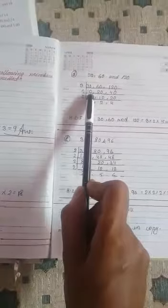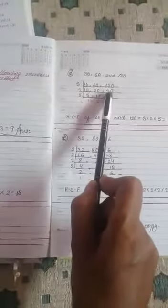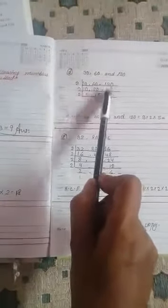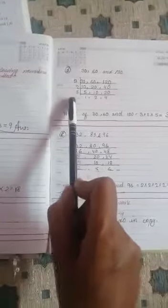And 3, 3 tens are 30. 3 into 20 is 60. 3 into 40 is 120. Like this you have to do.